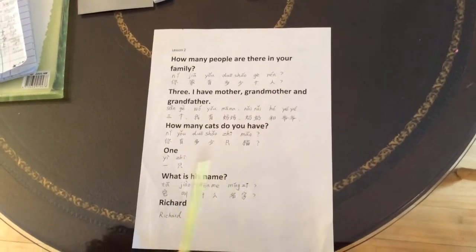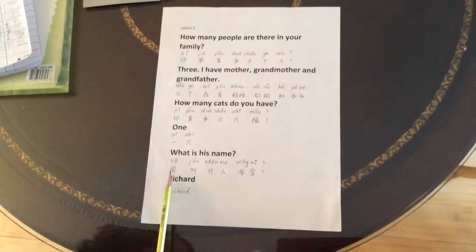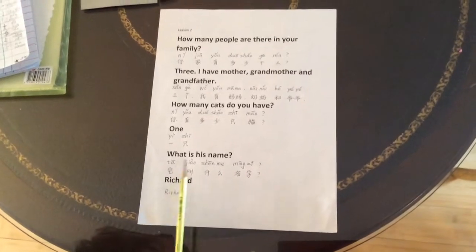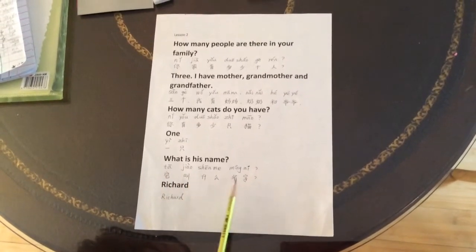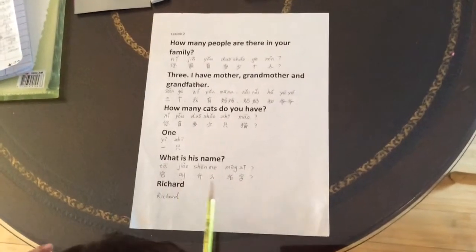你有多少只猫? 一只. 猫 uses 只 to describe. 他叫什么名字? Richard. Or you can say 你叫什么名字, what is your name?